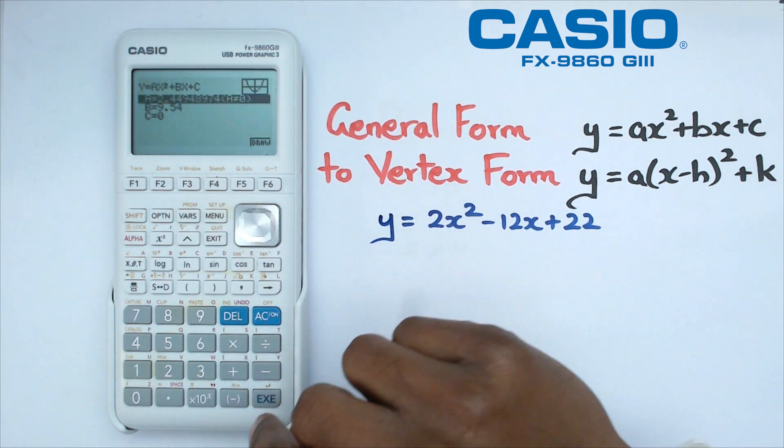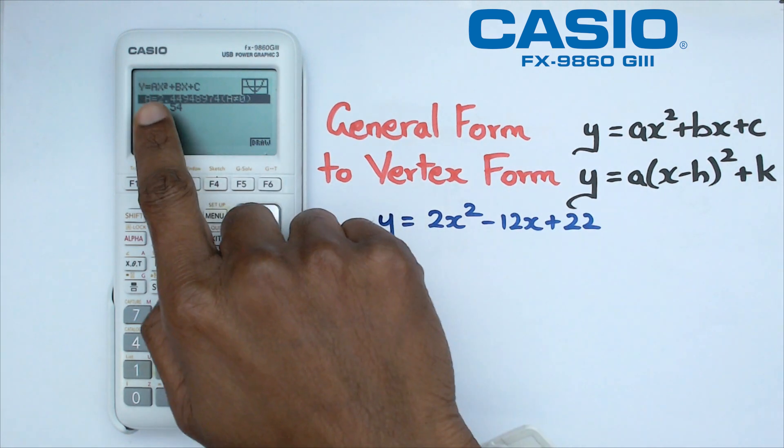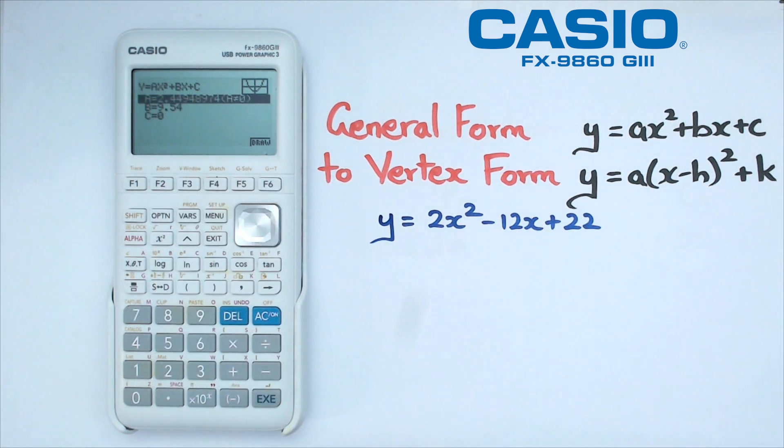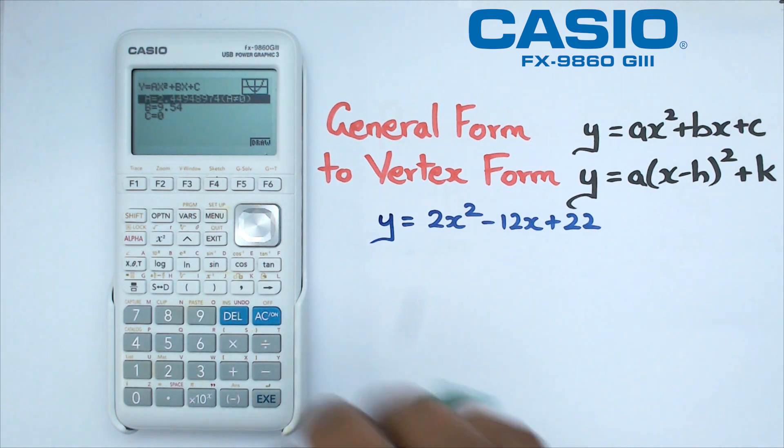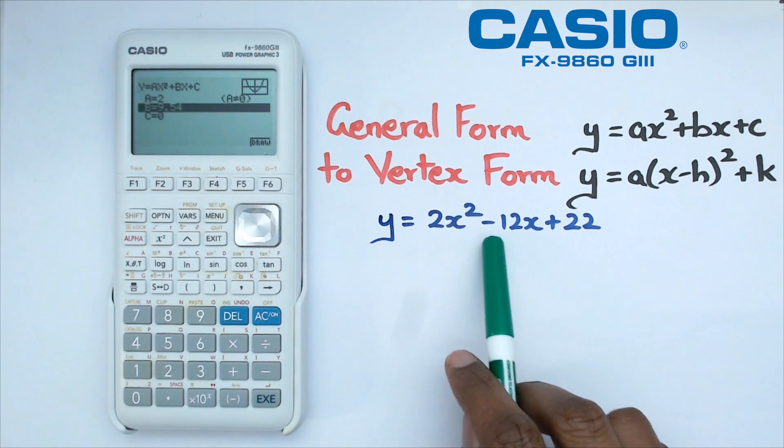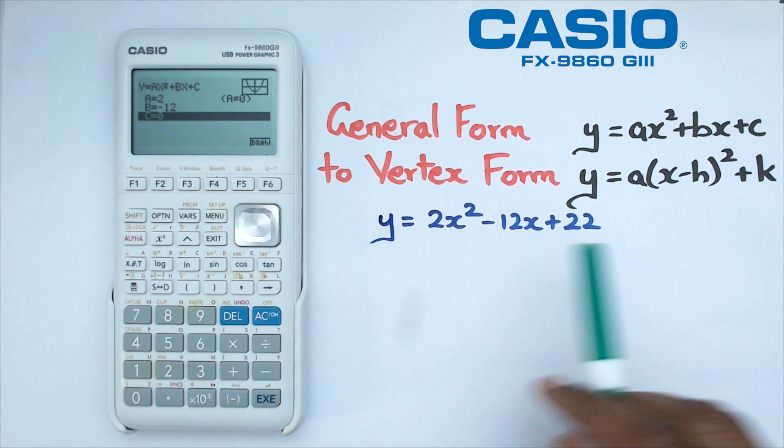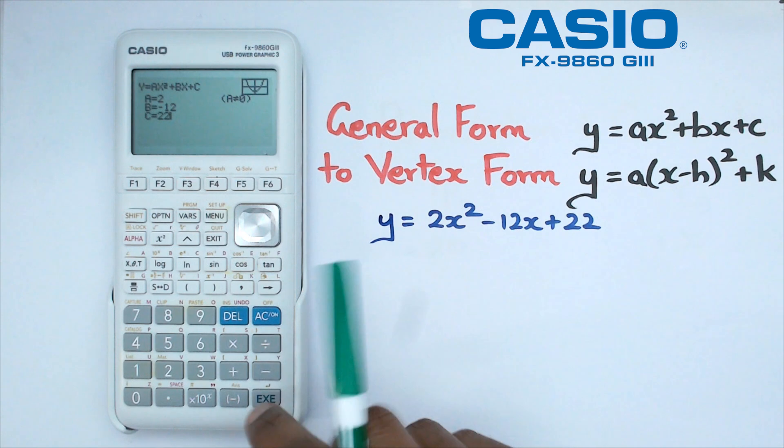So we're going to click on exe and what we're going to do is we're going to substitute the values of a, B, and C. Now a is the coefficient of x squared so in this case it's going to be 2, B is the coefficient of X which is minus 12, and C which happens to be 22 which is the constant by itself.